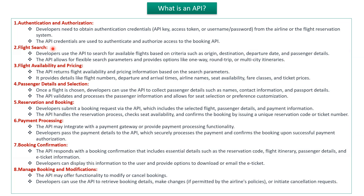The second one is the flight search related API. Developers use this API to search for available flights based on criteria like origin, destination, departure date, and passenger details. This API allows for flexible search parameters and provides options like one-way trip, round trip, or multi-city itineraries.